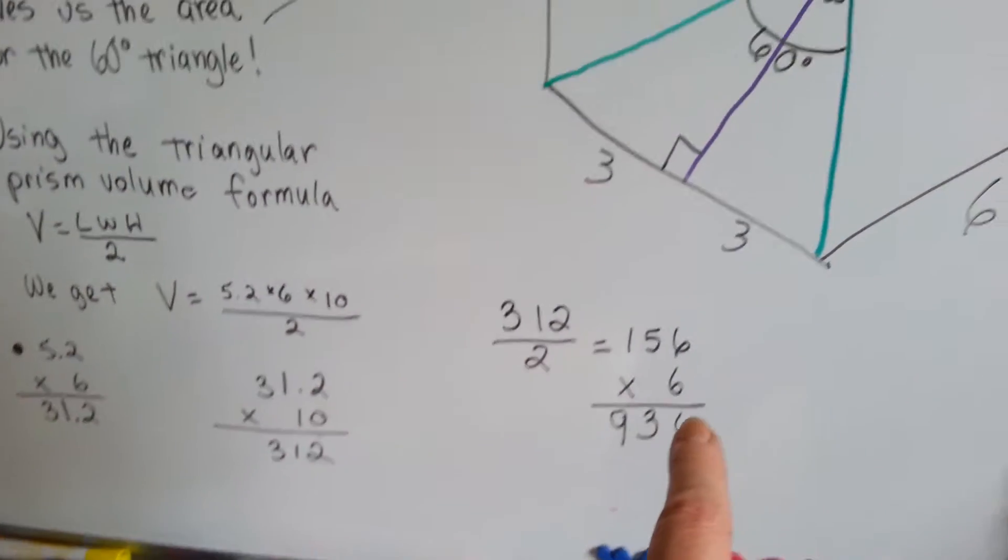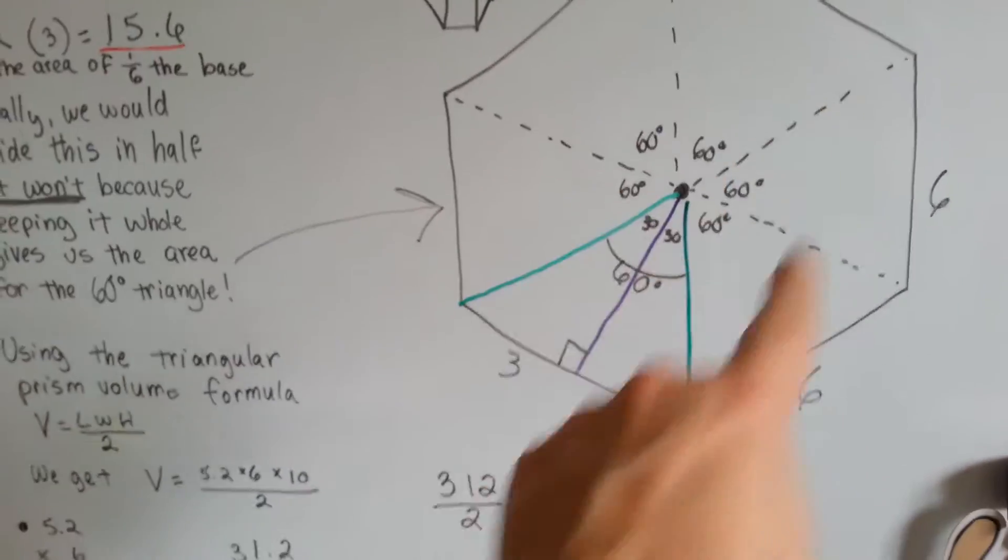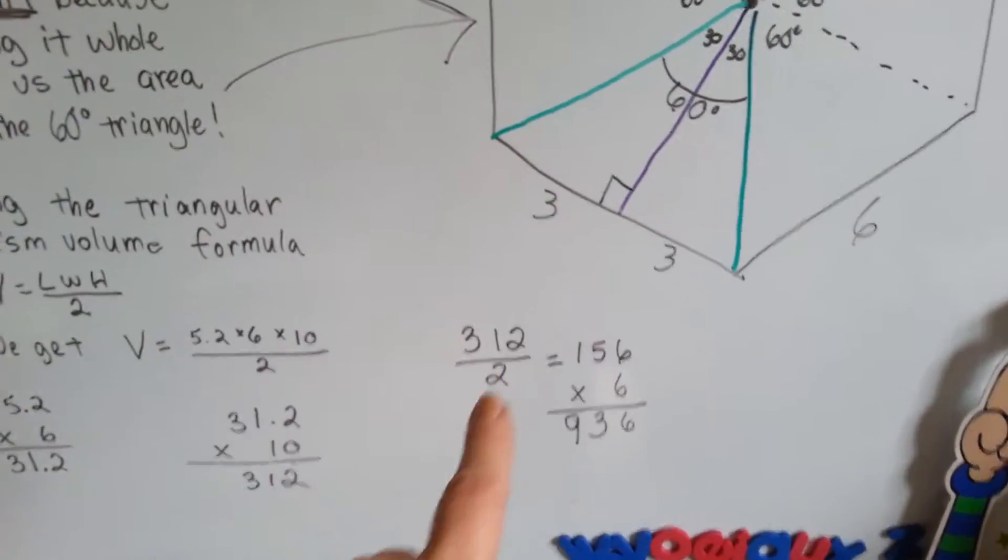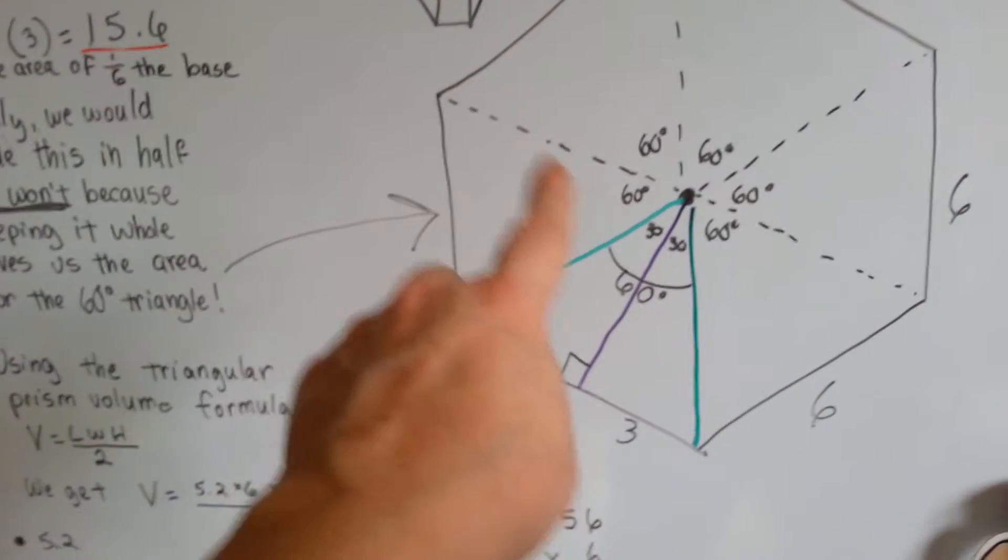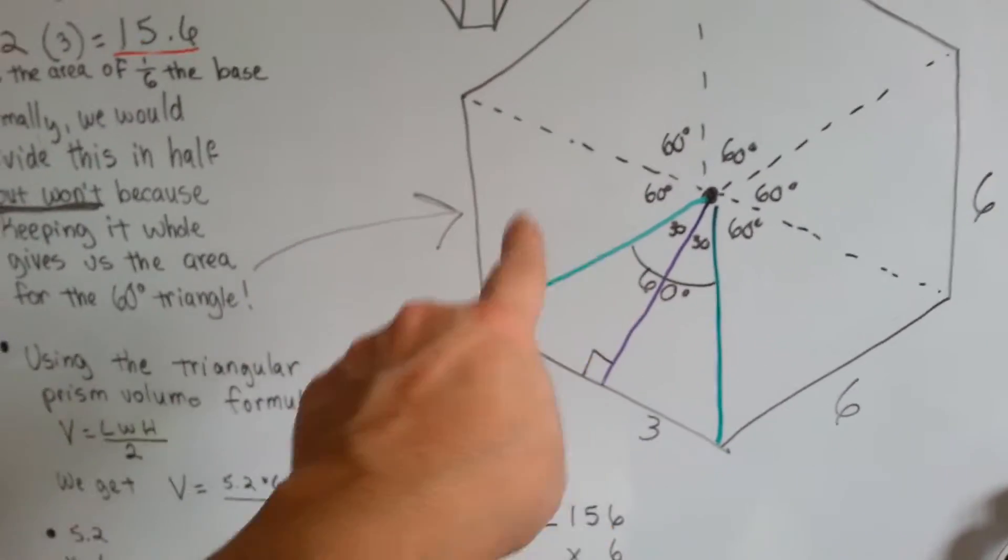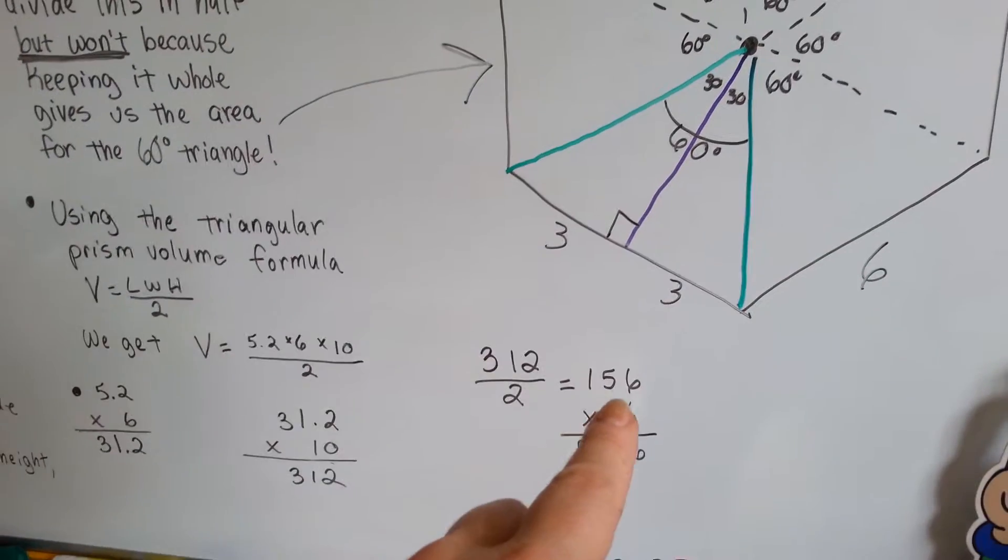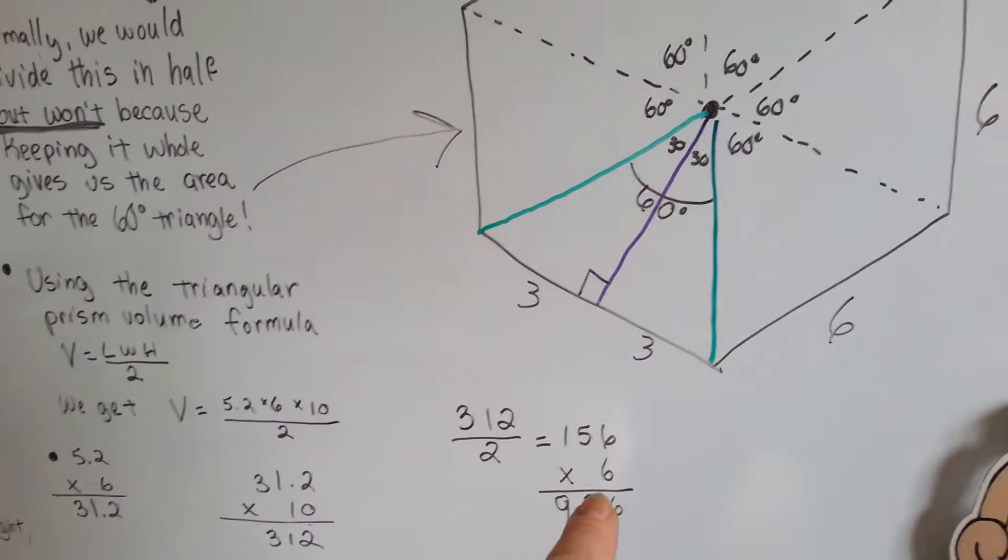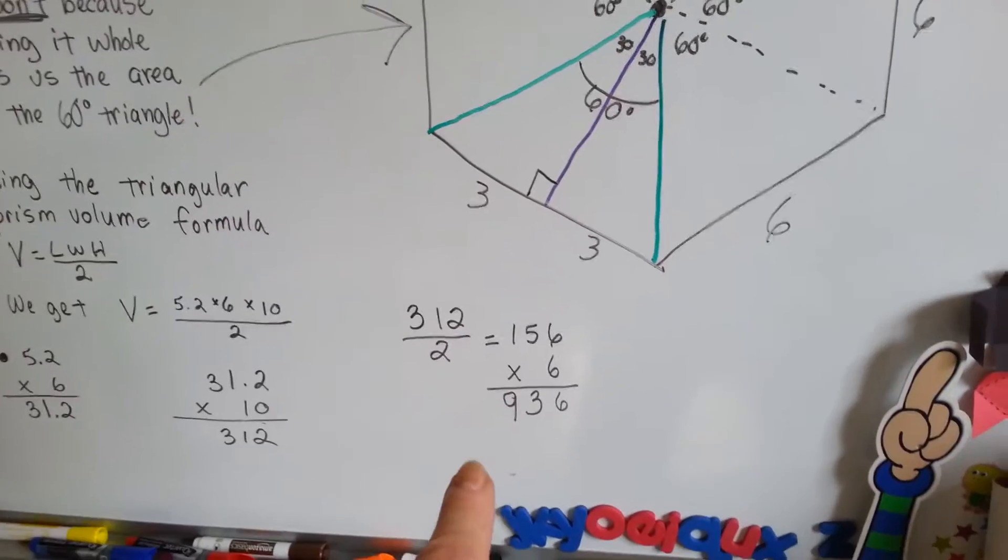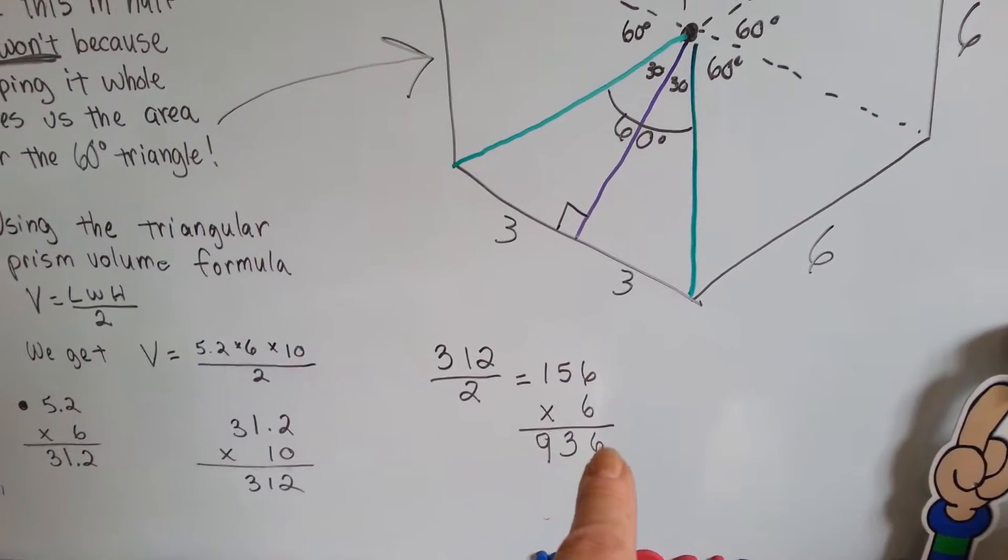We're going to multiply this by the 6 triangles. So we know the volume of one of these triangles, of the volume of just one little triangle in here of the 6, is 156. Now we need to multiply it by the 6 triangles. And it comes out to 936.